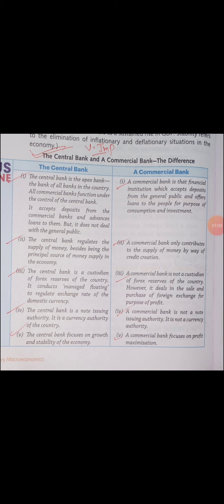जो Commercial Bank होता है वो General Public के लिए काम करता है। The Central Bank regulates the supply of money, besides being the principal source of money supply in the economy. जो Central Bank होता है वो Regular Supply करता है Money की।